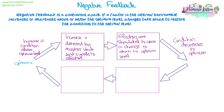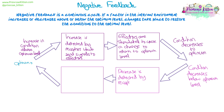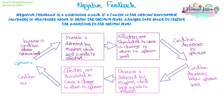This is actually a cycle - that factor decreasing towards the optimum might then decrease past the optimum, or it could decrease for another reason at another time. So it decreases below the optimum, that decrease is detected by receptors again which send signals to the effector via a coordinator, and the effectors cause a change to return the factor back to the optimum level. This can go up and down constantly - it is a continuous cycle to make sure the condition is maintained within acceptable limits.